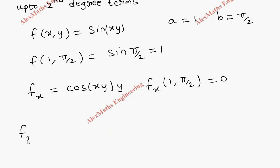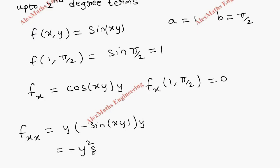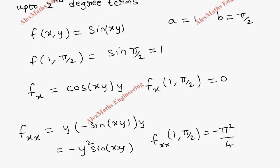Then we find fxx by differentiating fx again with respect to x, keeping y constant. The derivative of cos(xy) is -sin(xy) · y, and multiplying by the existing y gives fxx = -y² · sin(xy). So fxx(1, π/2) = -(π/2)² · sin(π/2) = -π²/4 · 1 = -π²/4.